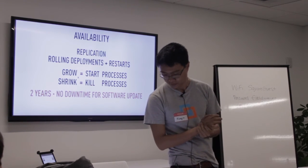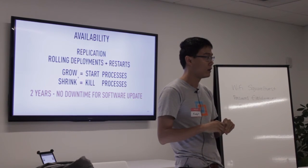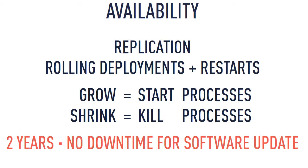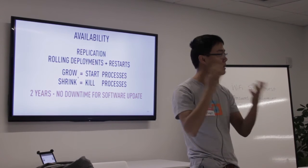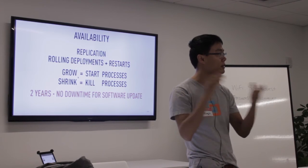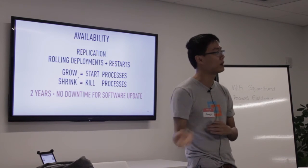In response to a question: we always perform dictionary encoding. Dictionary encoding is done at a column level, and the bitmap indexes are built for each value of the column.